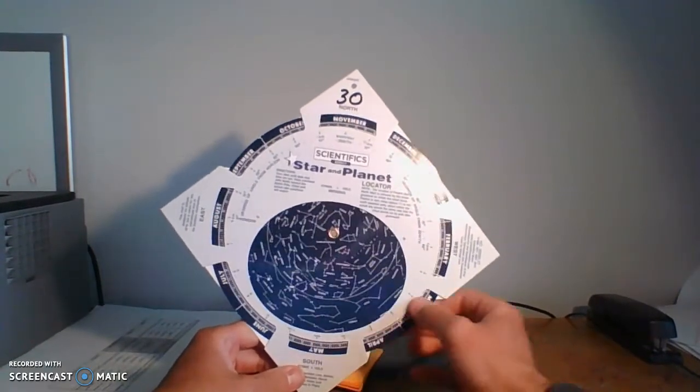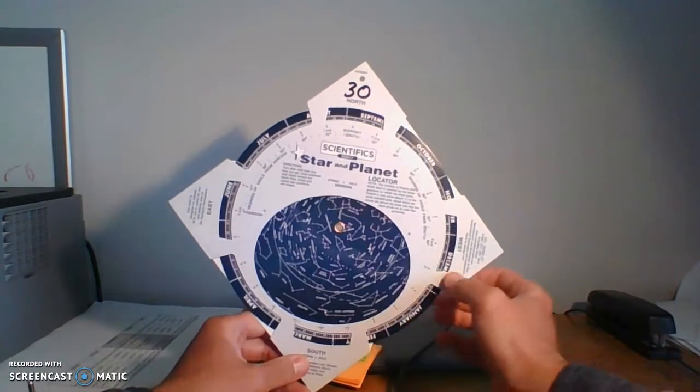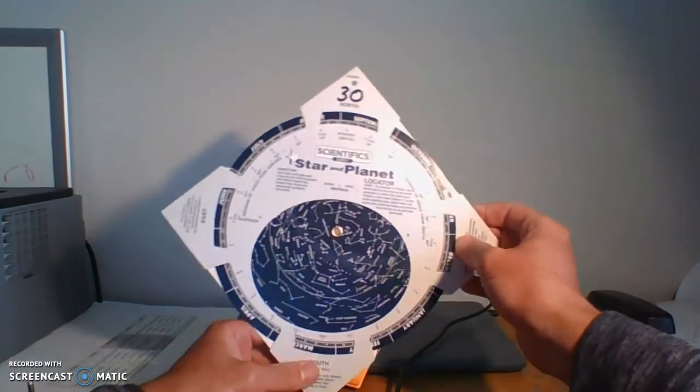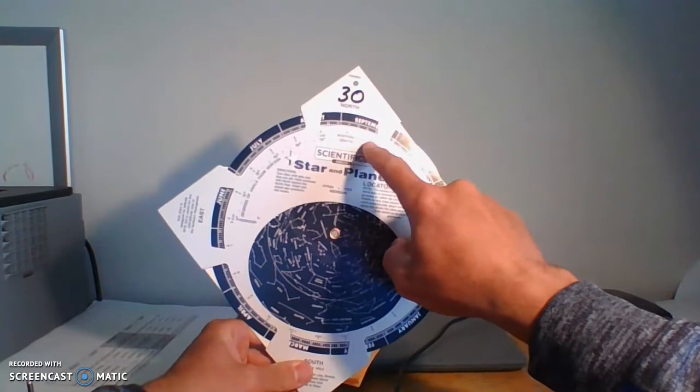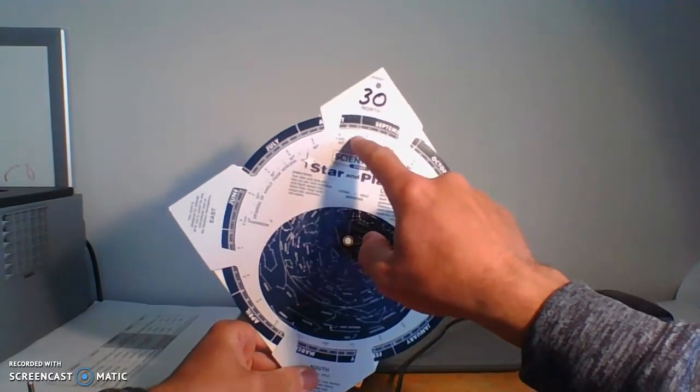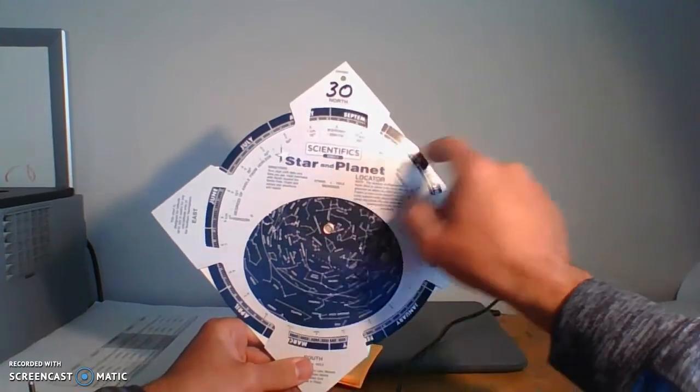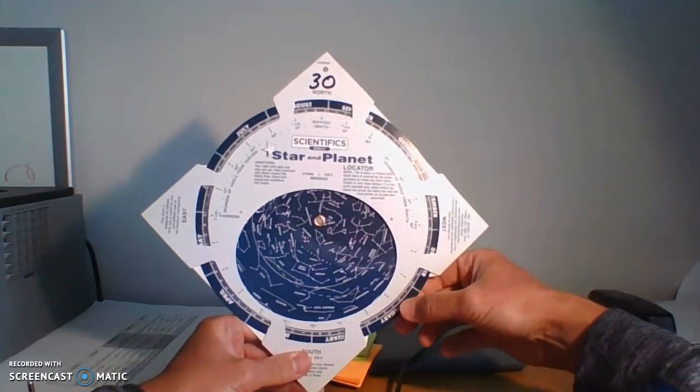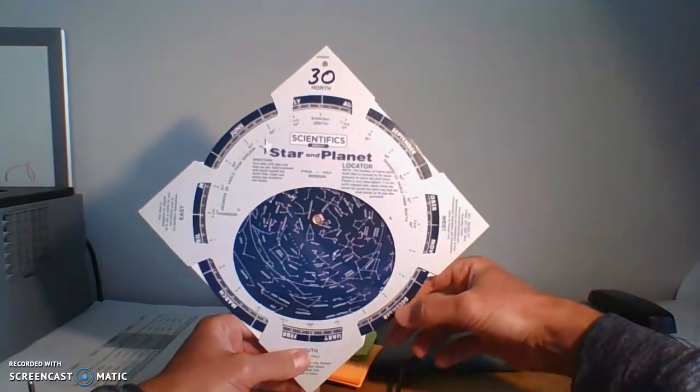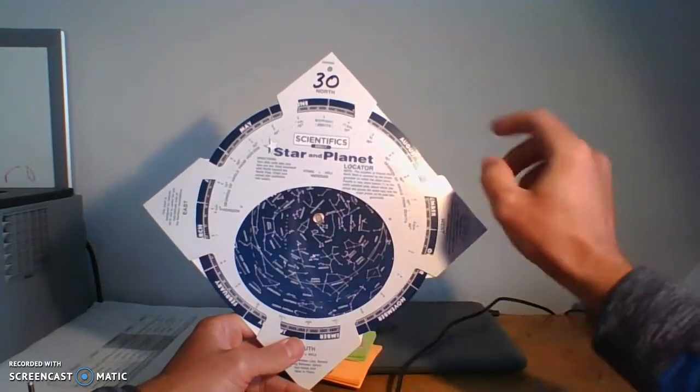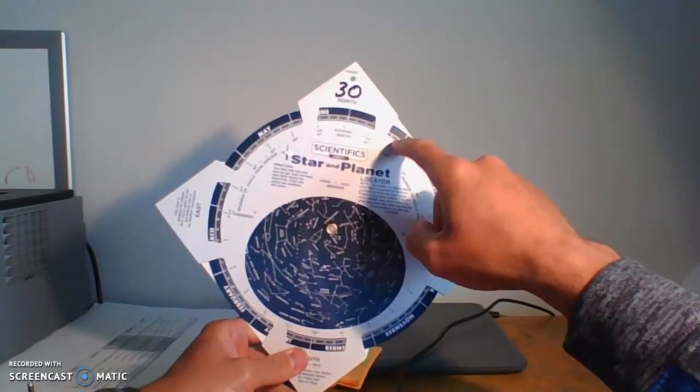There's a blue circle that turns on the inside. And on the outside, you've got your times. You can see there's midnight, 11 p.m., 10 p.m., 1 a.m. And as the blue circle turns, the dates are on the blue circle.